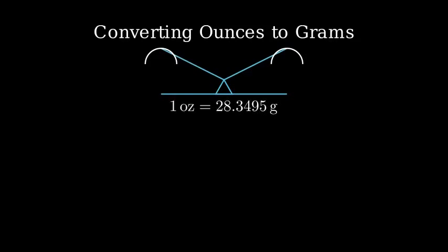To convert between ounces and grams, we need to know the conversion factor. One ounce equals 28.3495 grams.